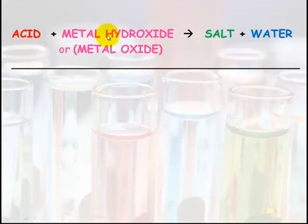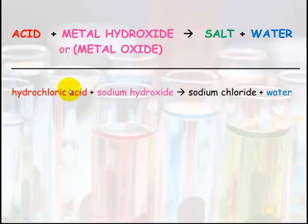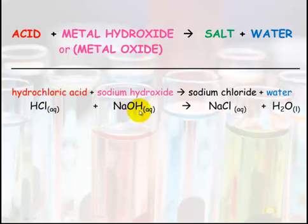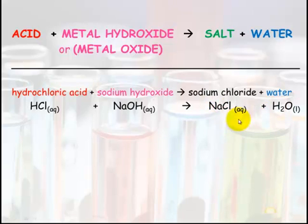An acid plus a metal hydroxide or a metal oxide will make a salt and water. An example: hydrochloric acid plus sodium hydroxide makes sodium chloride plus water. HCl plus NaOH makes sodium chloride — which is the salt — sodium hooks up with chloride, and what's left is H₂O. Remember water is always liquid. Don't forget your states. How do you tell if your salt is soluble? You look it up on the solubility table.